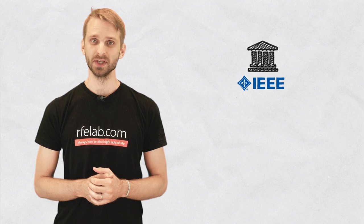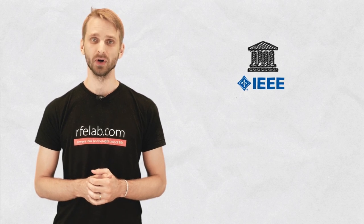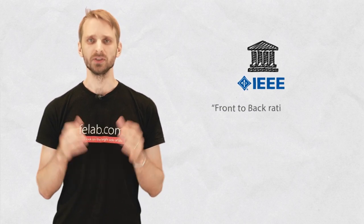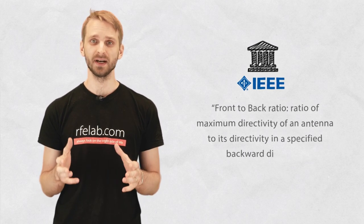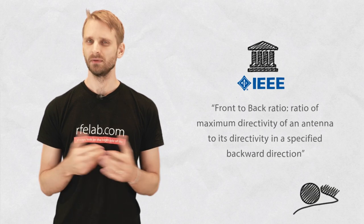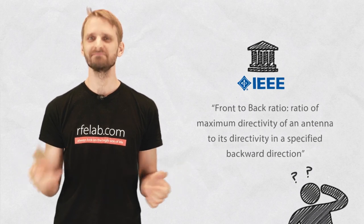A major engineering organization defines front-to-back ratio in the following way: It is the ratio of the maximum directivity of an antenna to its directivity in a specified backward direction. Wondering what this means in human language? Let's have a look.